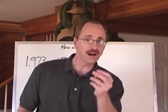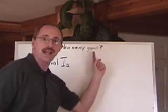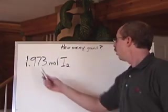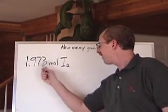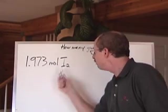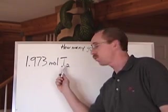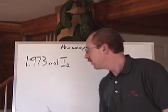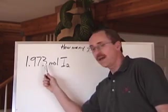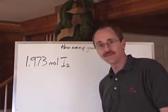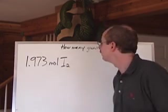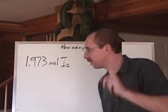We've asked how many moles, but now let's ask how many grams do we have in 1.973 moles of iodine. So this is how many moles of I₂ we have. Is that more than 6.02 times 10 to the 23 of these? Yeah, because that's more than 1 mole. How many grams do we have, though? That's the question.